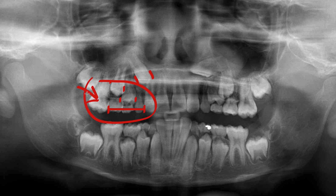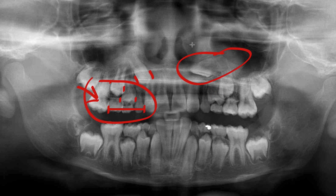When posterior teeth mesialize, they create more crowding. On the upper left side, where the canine is impacted, you can see a turned lateral and a turned premolar — the upper left first premolar looks like it's sideways. The upper left second premolar is also coming in at a pretty poor position, indicating a poor eruption pattern.